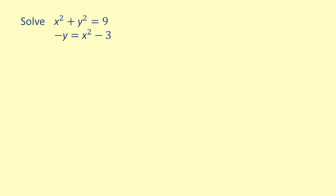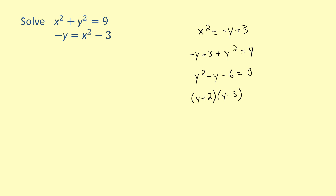Let's take a look at another example. Here we have a system of equations where the first equation is x squared plus y squared is equal to nine. This is the circle. The second equation is negative y equals x squared minus three, which is a parabola. Similar to the previous example, we will start by solving for x squared, giving us x squared is equal to negative y plus three. Now we substitute this into our first equation. Setting the resulting equation equal to zero and factoring the trinomial gives us the quantity y plus two times the quantity y minus three equals zero. Setting each factor equal to zero, we get two possible solutions for y: negative two and three.